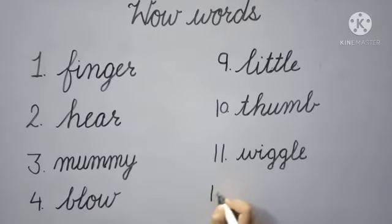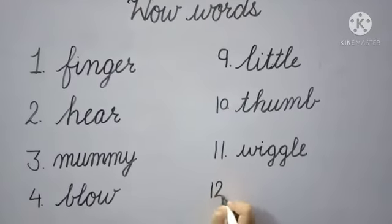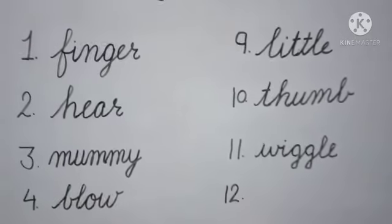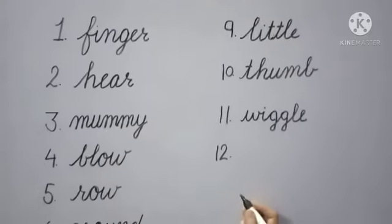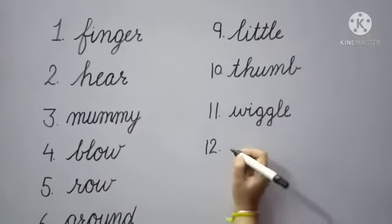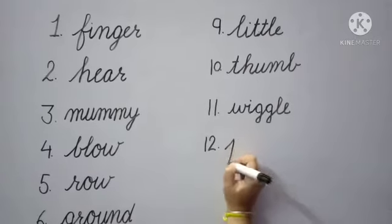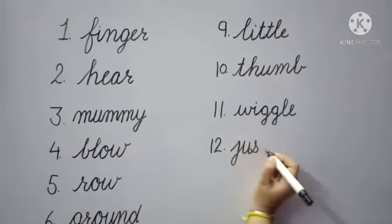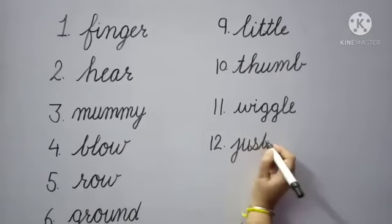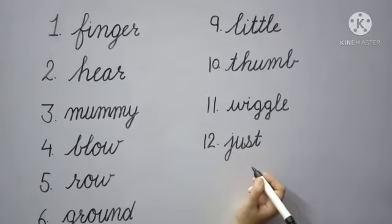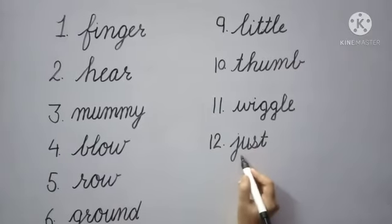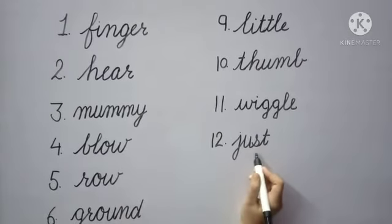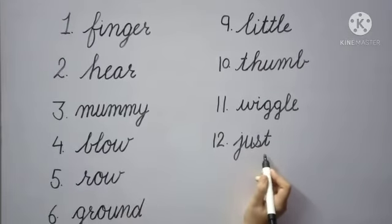Next, number 12: 'just'. What is the spelling of just? J-U-S-T, just. Just means 'sirf/keval' (only/merely).